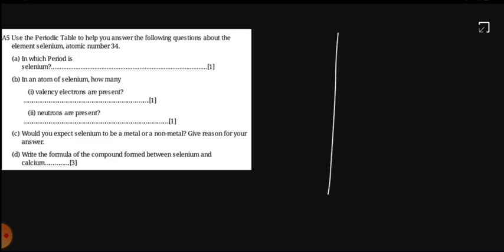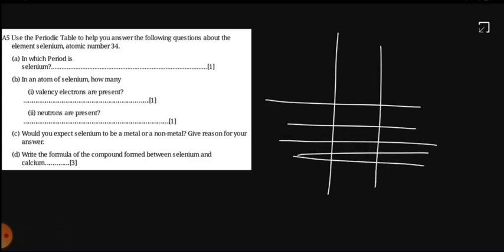We know that the rows that are going like this, these are called periods. And these columns, these are called groups.